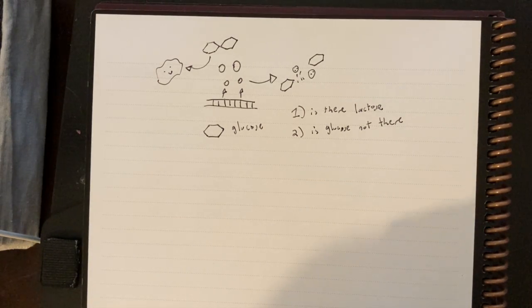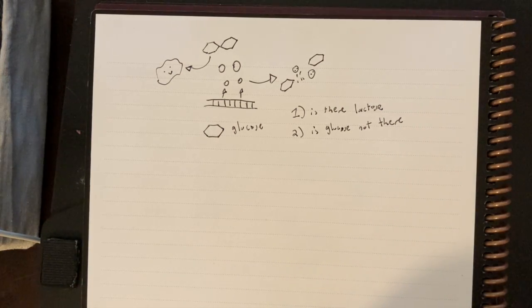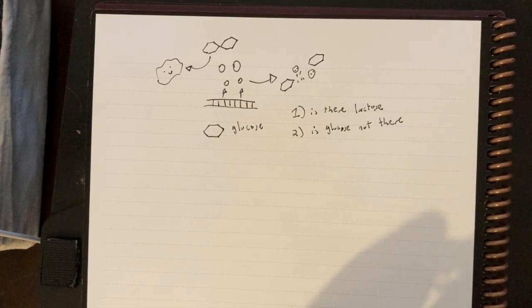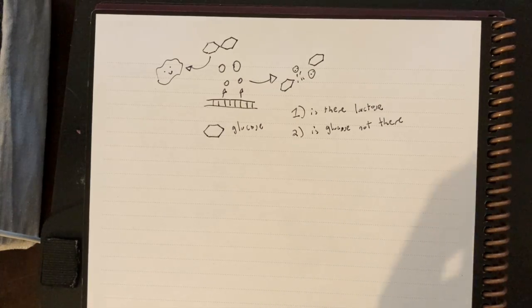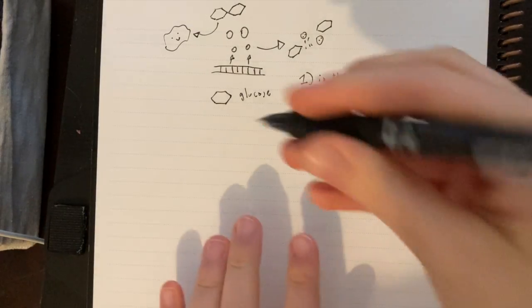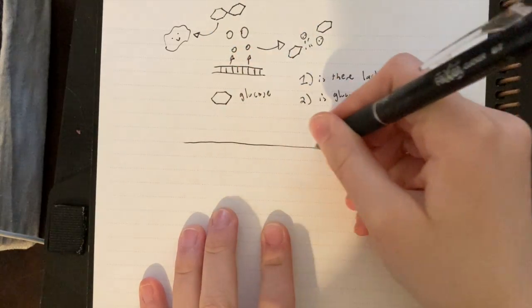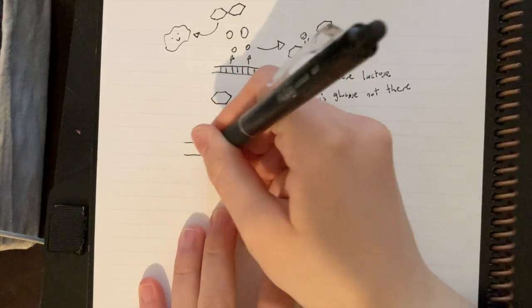So how can the cell tell when there's lactose and when there's glucose, and then how does it use that signal to change what proteins it produces? It does so through gene regulation. So let's look at the lac operon.